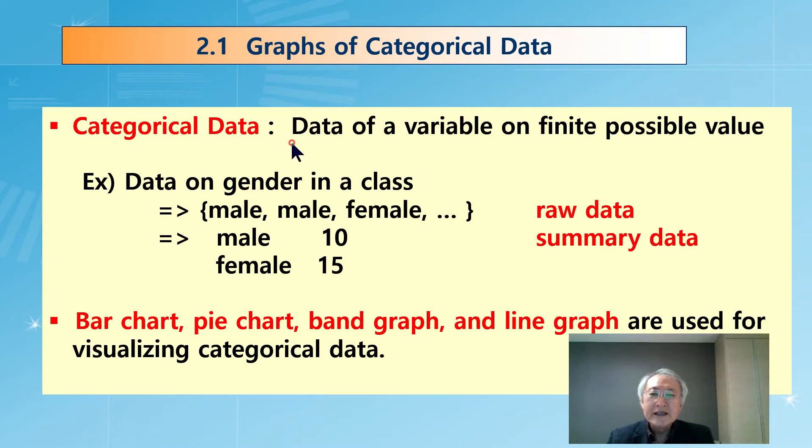As you know, categorical data implies data of a variable on finite possible values. How many possible values? We don't know, but typically it is less than 10. In case of Easter, we plot graphs with less than 9 categories.